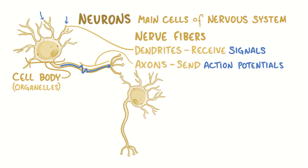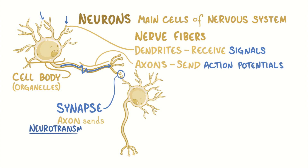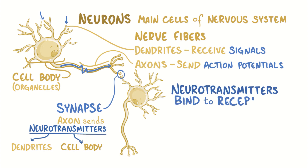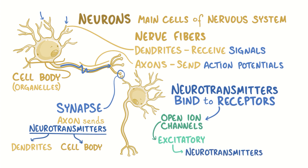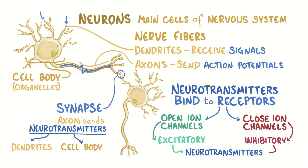Where two neurons come together is called a synapse, and that's where one end of an axon sends neurotransmitters to the dendrites or directly to the cell body of the next neuron in the series. Some neurotransmitters bind to the receptors and tell the cell to open up the ion channels and relay the electrical message, and these are called excitatory neurotransmitters. But there are others which can close the ion channels and prevent an electrical message from going through, and these are called inhibitory neurotransmitters.